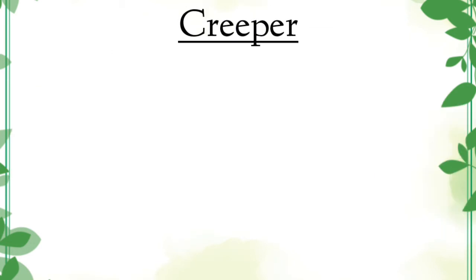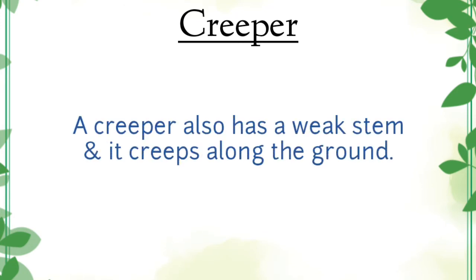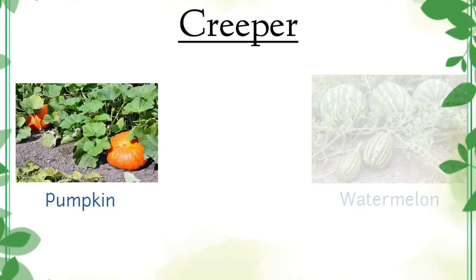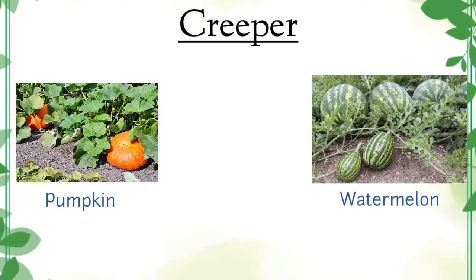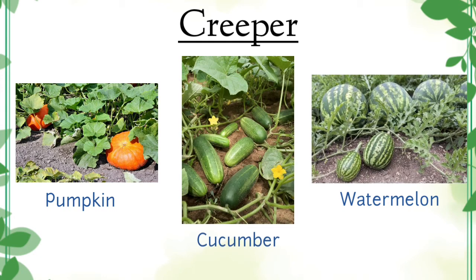Creeper. Same like the climber, a creeper also has a weak stem and it creeps along the ground. Examples of creepers are pumpkin, watermelon, cucumber, etc.